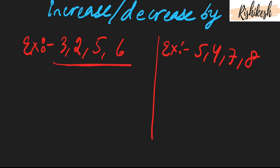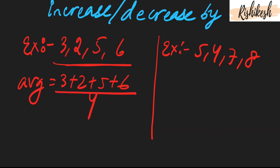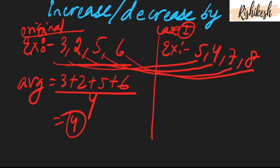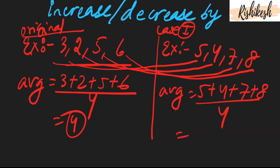Let us take an example. If we find out the average of the set {3, 2, 5, 6}, the average equals 3 + 2 + 5 + 6 divided by 4, which is 16 by 4, that is 4. This is the original case. In the second case, if we increase each quantity by 2, we get {5, 4, 7, 8} — wait, let me recalculate: 9 + 7 = 16, 16 + 8 = 24, divided by 4, comes out to be 7. So the average also increased by 2, confirming the property.